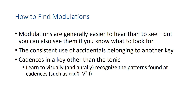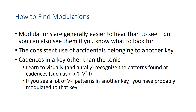Learn to recognize cadential patterns such as a cadential 6-4 going to 5-7 to 1 — that sol-sol-do motion helps identify cadences. If you see a lot of these 5-1 cadential motions in another key, you've probably modulated to that key. That's pretty much it for common chord modulations — we'll apply this in class soon. Go ahead and take the quiz that follows.